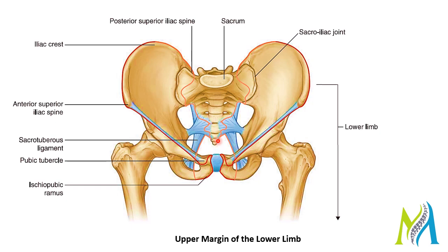The last boundary is a joining line starting from the sacrotuberous ligament — a very thick ligament running from the lateral and inferior sacrum to the ischial tuberosity — and then to the pubic symphysis. This separates the lower limb from the perineum.